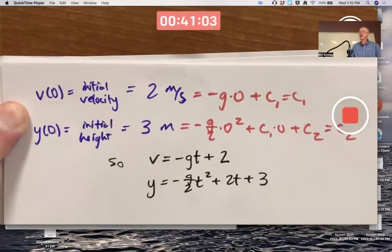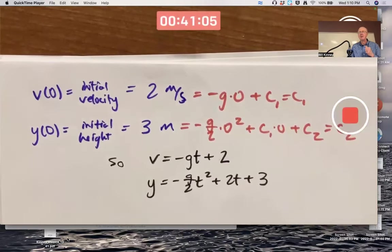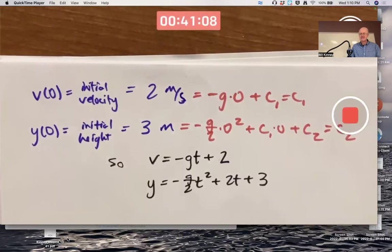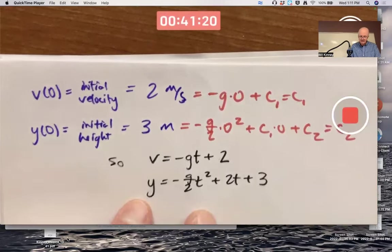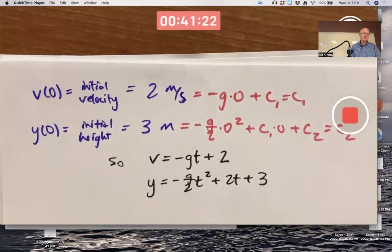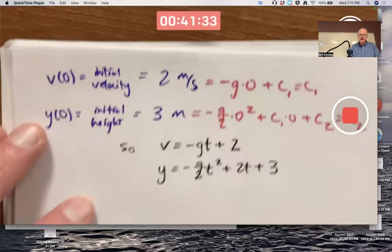And G is fixed. Say it's 9.8. These are two specific functions called particular solutions of not just the differential equation, but also satisfying these initial conditions. That means they solve something called an initial value problem.